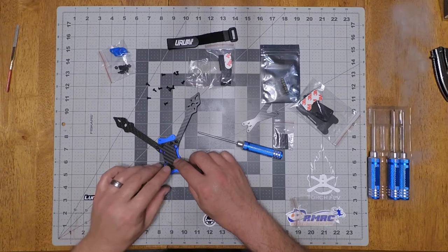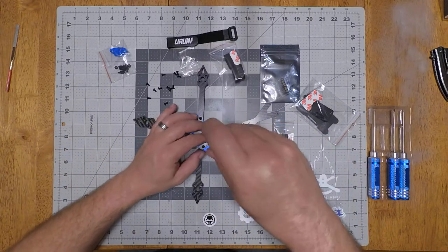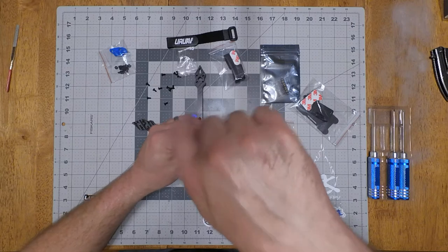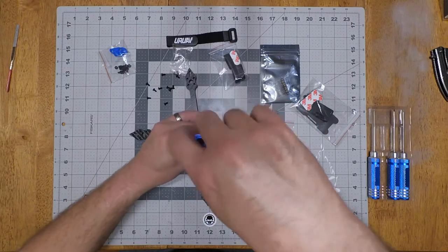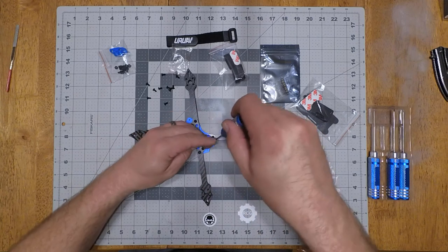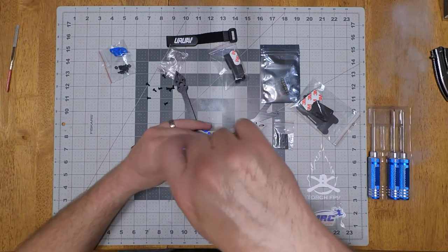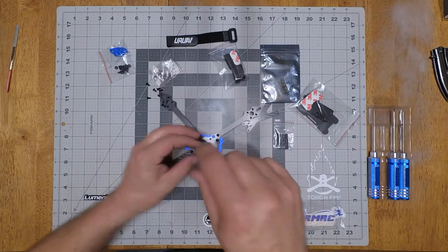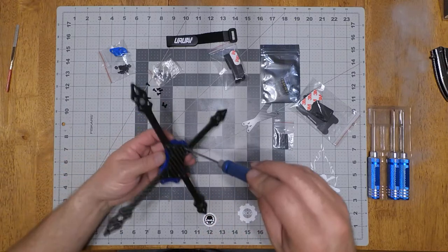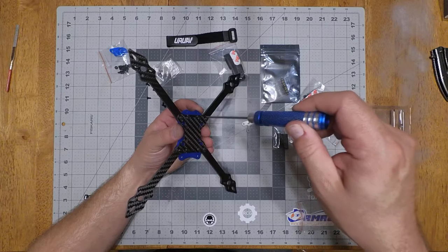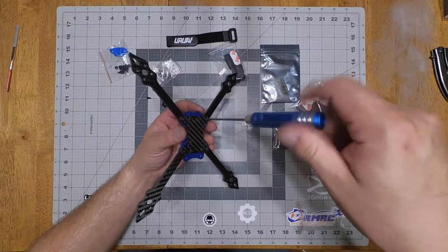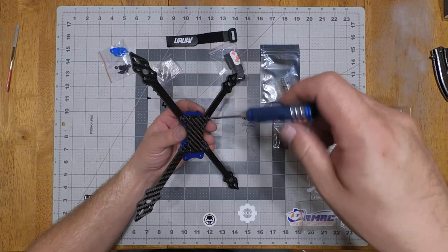Then just push the screws through. Start them in there. So I'll do it so you can see. And as soon as they're all started in, then you know you're not going to cross thread it. Then you can go ahead and tighten them down.